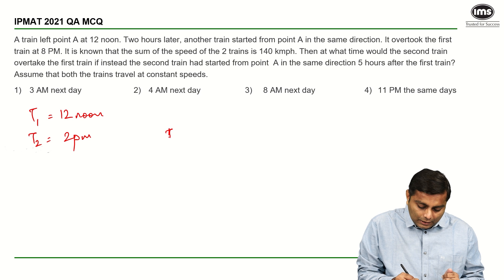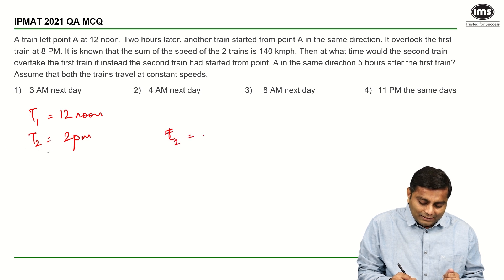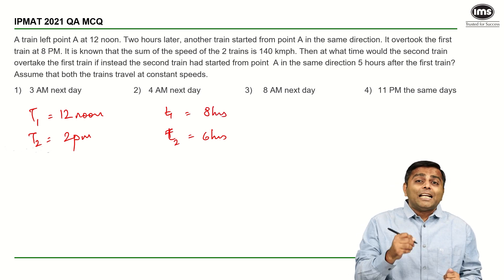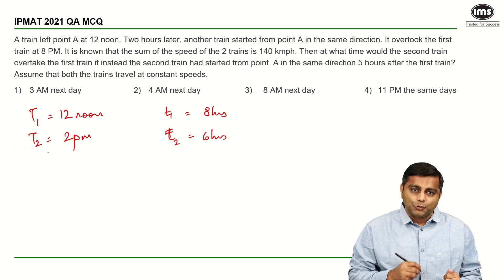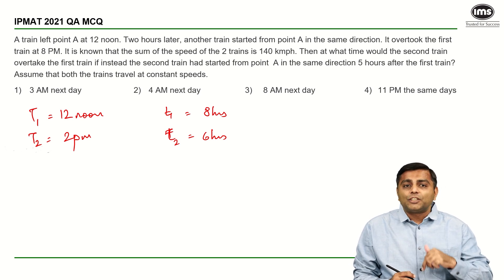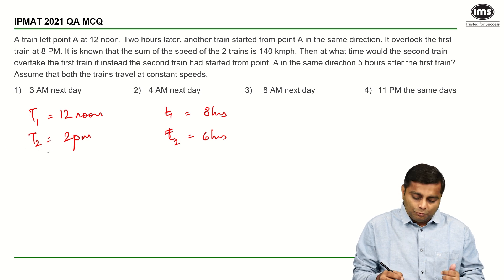The time taken by the second train is 6 hours, time taken by the first train therefore has to be 8 hours because it started at 12 noon and they met at 8 o'clock. So, the ratio of their times is 8 to 6 or 4 to 3. If the ratio of their times is 4 to 3, ratio of their speeds will be 3 to 4.